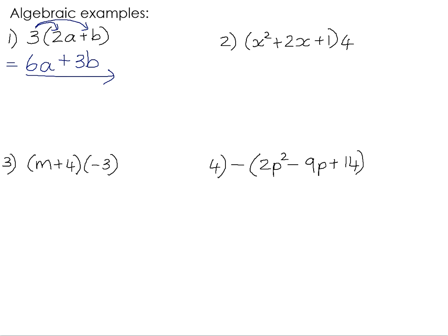In number 2, we have a slightly different scenario because it's a trinomial in the bracket, so we're going to need to multiply by all three terms in the bracket. And our number that we are multiplying by is being written at the end of the bracket. And this is not at all serious, because if we think about multiplication, it is what we call a commutative operation.